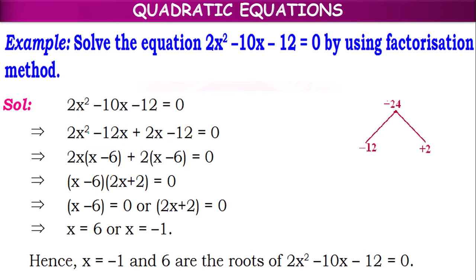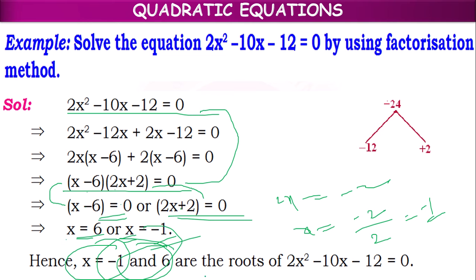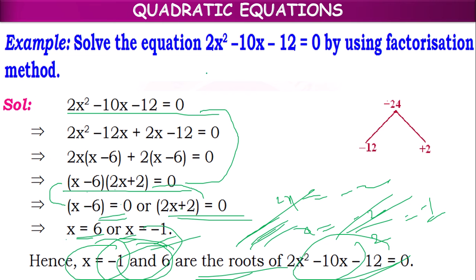According to step 2, for this quadratic equation these two are the factors: (x − 6) and (2x + 2). Setting each factor equal to 0: x − 6 = 0 gives x = +6; 2x + 2 = 0 gives 2x = −2, so x = −1. So x = −1 and x = 6. These are the roots, or solutions, or zeros of the given quadratic equation.